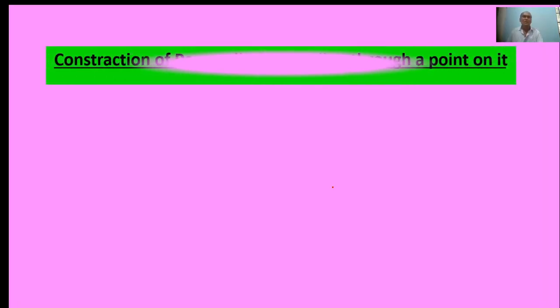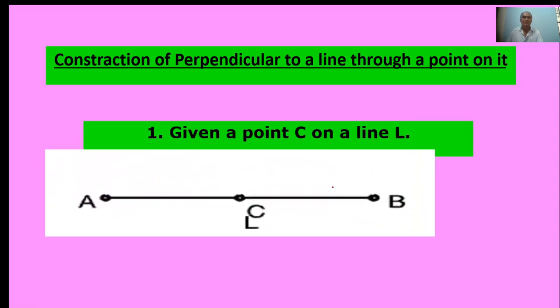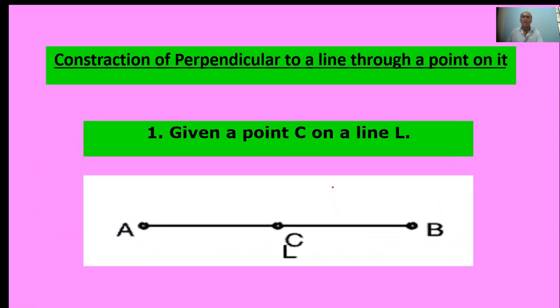Second topic: Construction of perpendicular to a line through a point on it. First of all, given a point C on a line L. Here, a line with point C is given.